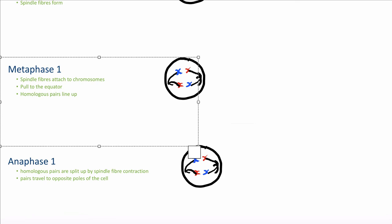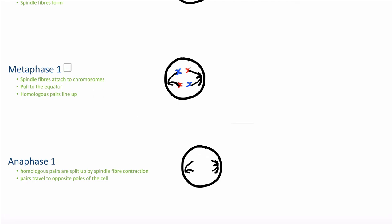In anaphase 1, the homologous chromosome pairs are separated. Chromosome 7 from mom and chromosome 7 from dad move to opposite poles of the cell as the spindle fibers contract and pull them apart. Critically, it is the homologous pairs being split — not the sister chromatids as in mitosis. The sister chromatids remain intact at this stage.